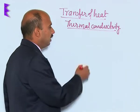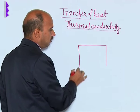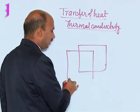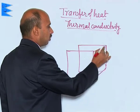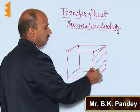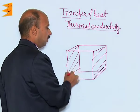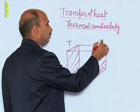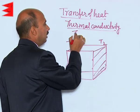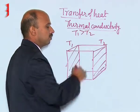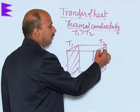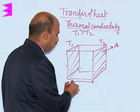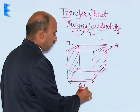We can define it this way. Suppose you have taken a cross section — a wire which has got a square cross section. These two faces of this metal: one is at temperature T1 and the other is at temperature T2, where T1 is greater than T2. The area of the faces is A and the distance between these two faces is delta x.